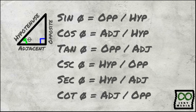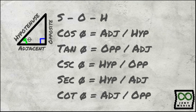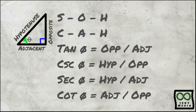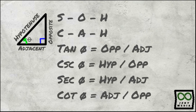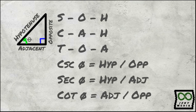For example, for the trigonometric function sine, you can use S-O-H: S for sine, O for opposite, H for hypotenuse. For cosine, you can use C-A-H: C for cosine, A for adjacent, H for hypotenuse. For tangent, you can use T-O-A: T for tangent, O for opposite, A for adjacent.